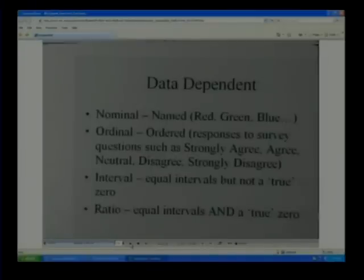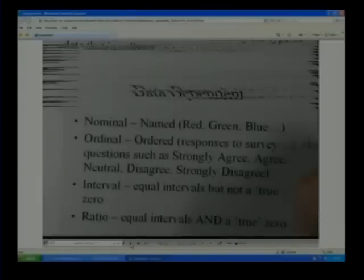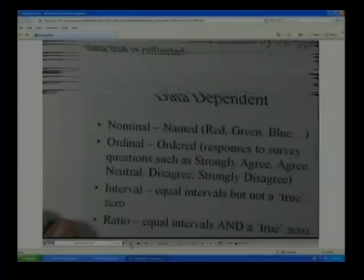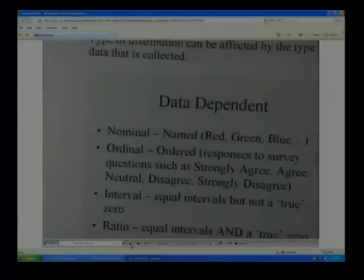We do surveys on a thing using a scale that you may hear called a Likert scale. A Likert scale is, you know, strongly agree, agree, no opinion, disagree, strongly disagree.